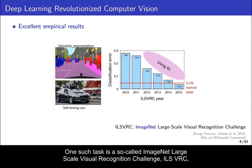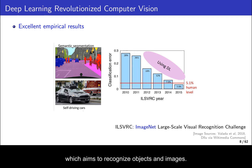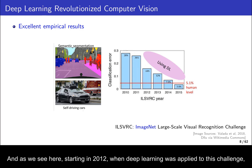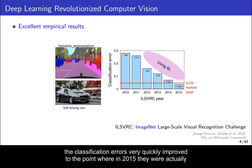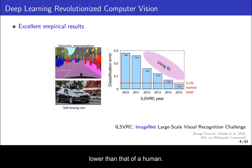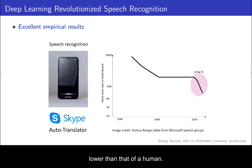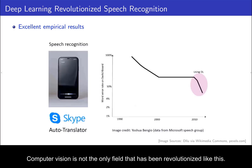A good indication of progress in computer vision is how well different systems do on standard challenge tasks. One such task is the ImageNet Large-Scale Visual Recognition Challenge (ILSVRC), which aims to recognize objects in images. As we see here, starting in 2012 when deep learning was applied to this challenge, classification errors very quickly improved to the point where in 2015 they were actually lower than that of a human.